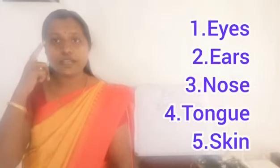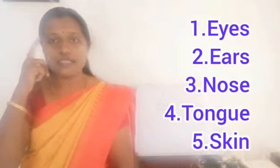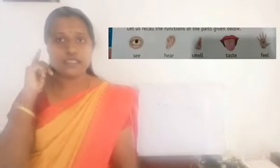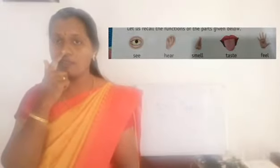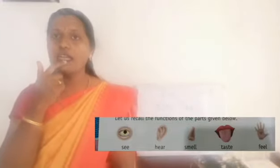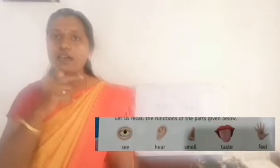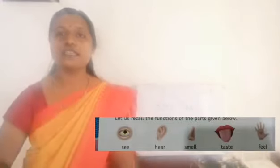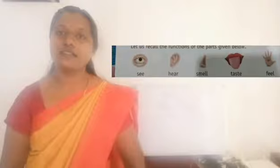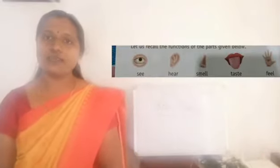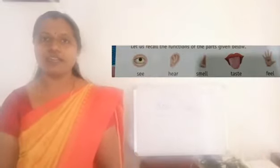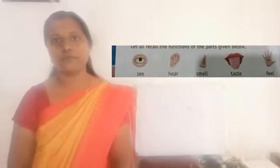You know that eyes, ears, nose, tongue and skin — these are the five sense organs present in our body.